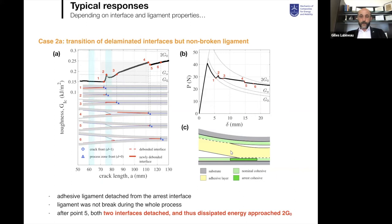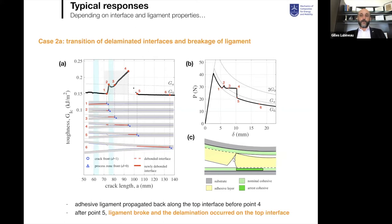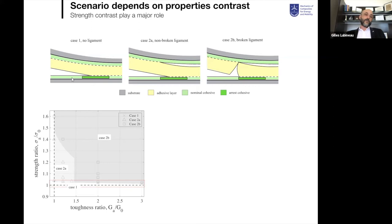This is the ideal scenario where the ligament survives. There are also situations where the ligament breaks during propagation — you get a local improvement initially, then at some point the ligament breaks and the elastic energy stored in it is dissipated during failure. So depending on how you tune the properties between light green and dark green, you get basically three responses: propagation on one interface; initiation of a secondary crack and creation of a surviving ligament; or initiation of a secondary crack and creation of a ligament that eventually breaks.